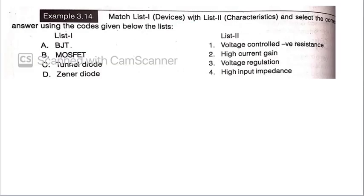Next question: Match list one with list two. We know that MOSFET provides us high input impedance. Therefore, B MOSFET is matched with four, that is high input impedance. Tunnel diode or Zener diode, Zener diode is used as a voltage regulator. Therefore, can I match this with voltage regulation? Third. VJT, we know it has high current gain. Therefore, second. And last one, tunnel diode, it has a negative resistance, voltage control, negative resistance.